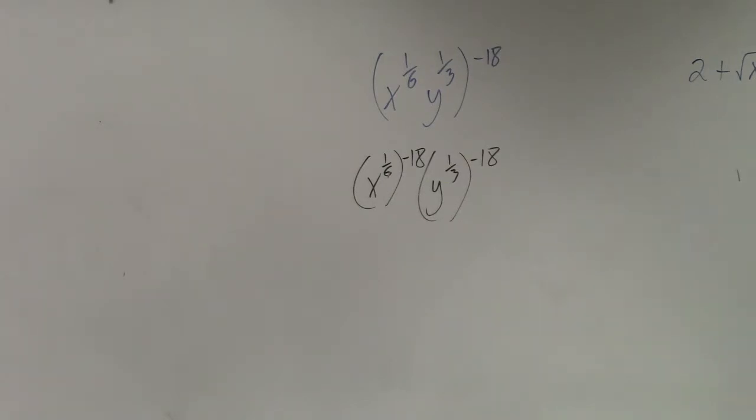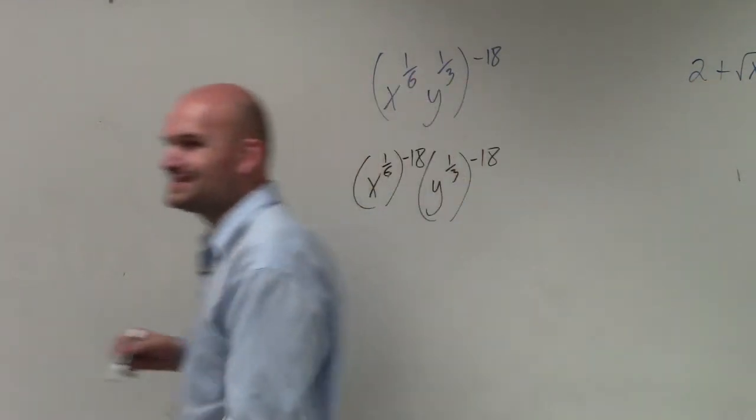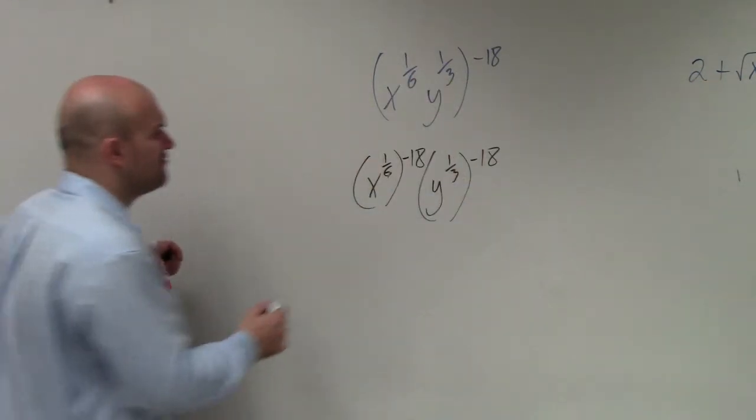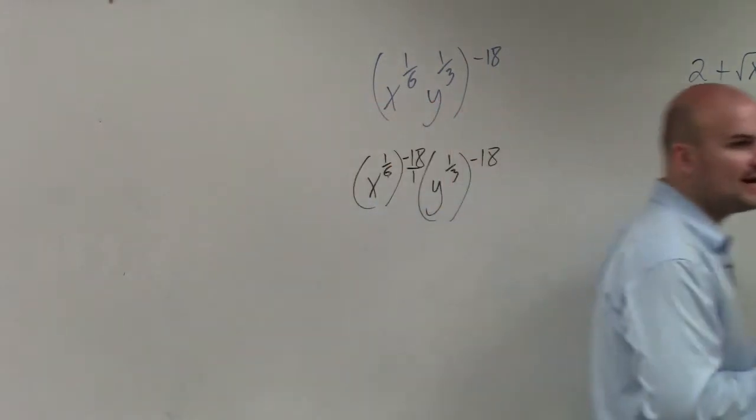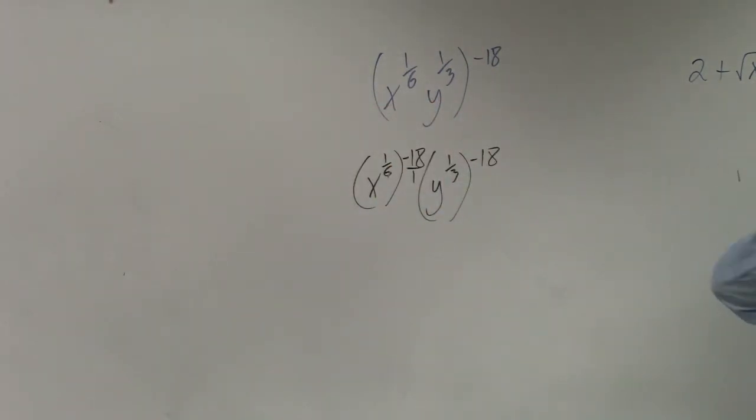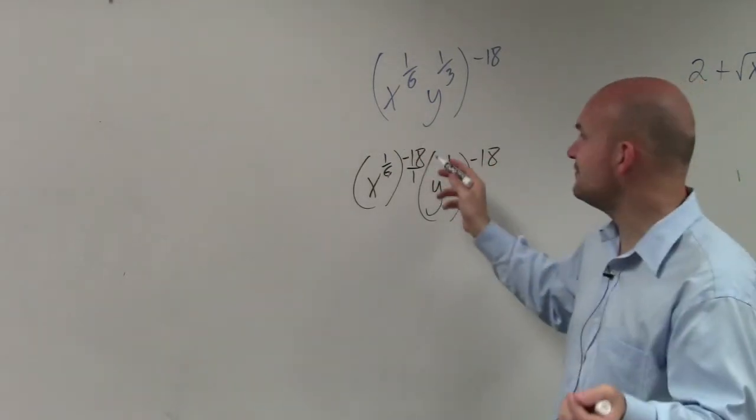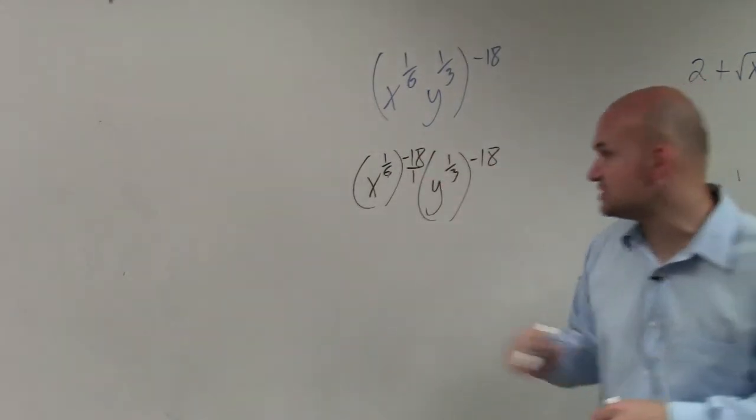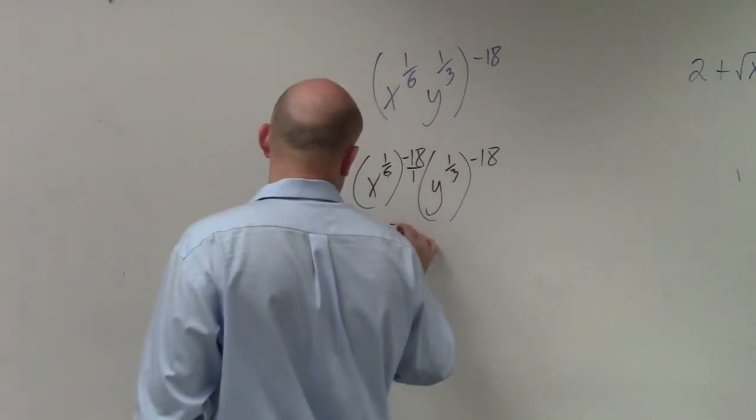It starts with an m, and we multiply them. So we have 1/6 times negative 18. How do you multiply a fraction times a whole number? Well, rewrite your whole number as a fraction, and multiply numerator times numerator, denominator times denominator. So in this case, I have negative 18 over 6, which is just going to leave me with negative 3.